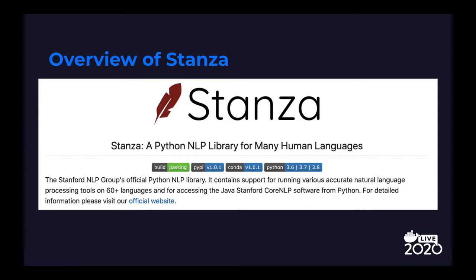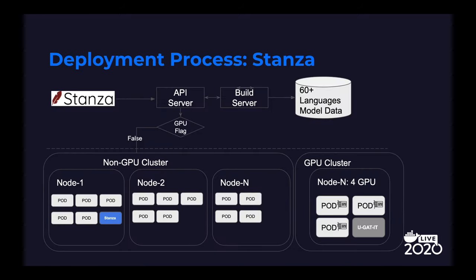The second example is the Stanza NLP project — Stanford's NLP project with pre-trained neural models supporting 60-plus languages. The deployment process is not very different from YouGotIt: the built Docker image is checked with the Docker inspect command, but in this case there is no NVIDIA flag, so the Stanza Docker image is deployed in the non-GPU cluster.